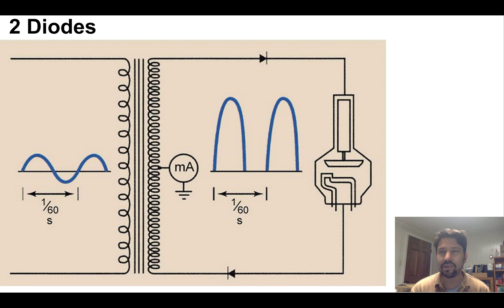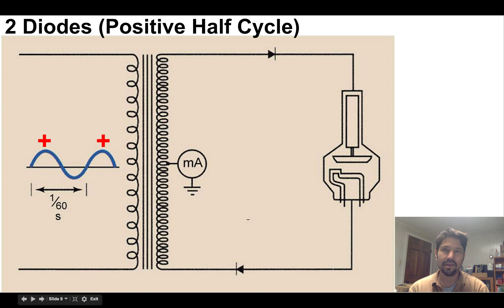So if we have a two diode system, and here's our high voltage transformer, so we're stepping it up. Let's see how we get from this input signal to this pulsating signal that hits the tube. So first, during the positive half of the cycle, when we're going up here and up here, not in this negative half, what happens?